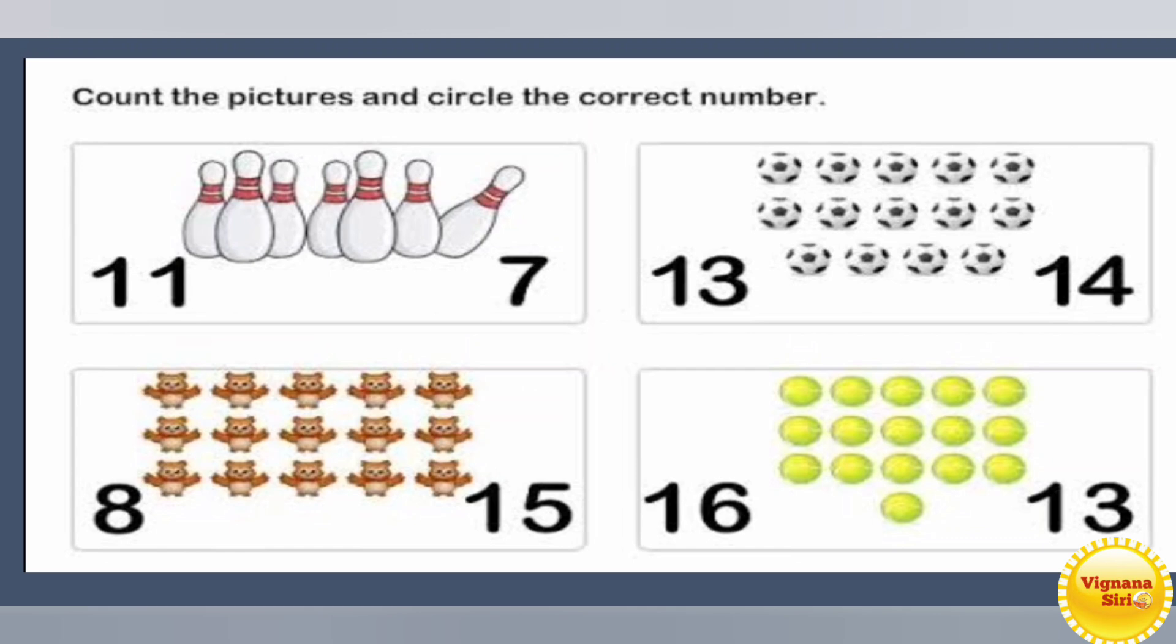Count the pictures and circle the correct answer. This is the counting part. Shall we start? You have to count and you have to tell the number. What is the correct number? First let the smash game thing, right. We will count one by one. 1, 2, 3, 4, 5, 6, 7. Total how many? 7. So we have to circle number 7.